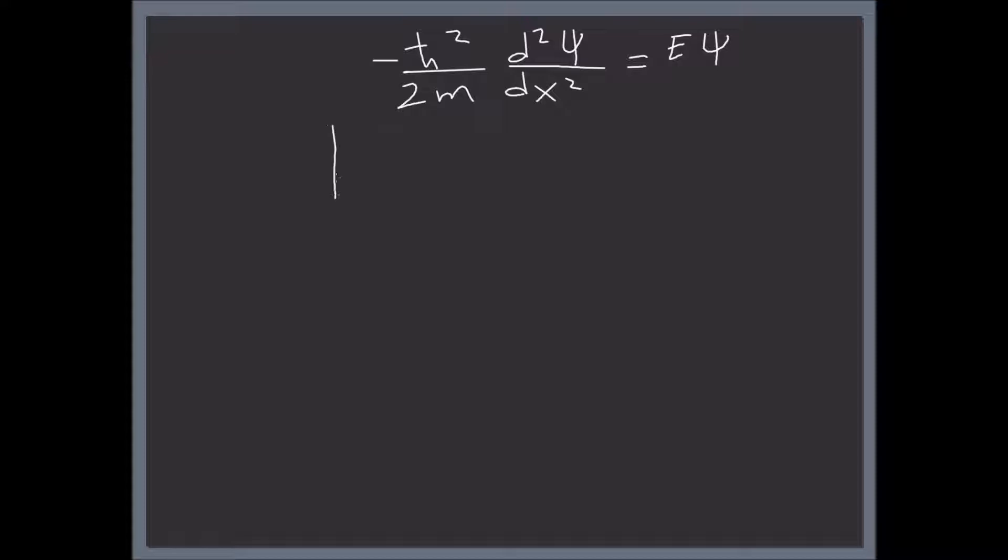So let's define a new variable K, just to make things easier, as the square root of 2ME divided by h-bar. So with this new variable, we have the second derivative of psi with respect to x equal minus K squared times psi.